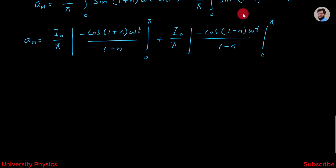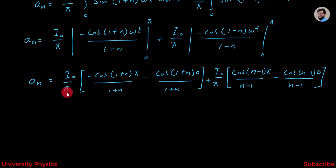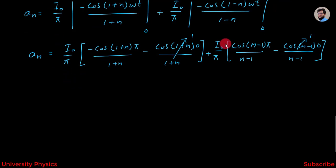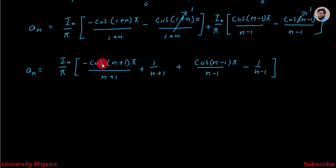Now putting in the limits, we get aₙ = (I₀/π){ [-cos((1+n)π)/(1+n) + 1/(1+n)] + [cos((n-1)π)/(n-1) - 1/(n-1)] }. Here the cos 0 terms equal 1, giving aₙ = (I₀/π){ [-cos((n+1)π)/(n+1) + 1/(n+1)] + [cos((n-1)π)/(n-1) - 1/(n-1)] }.